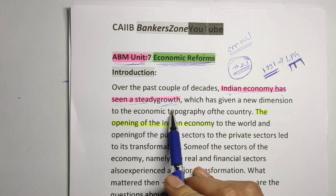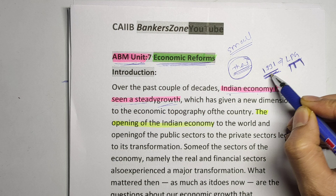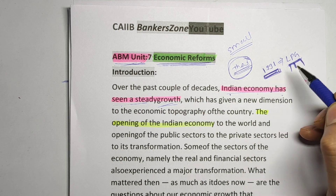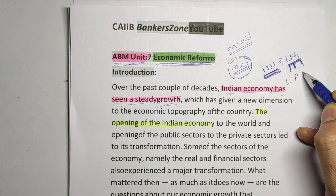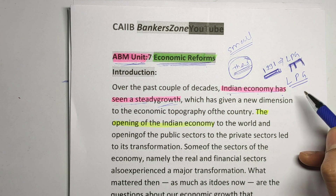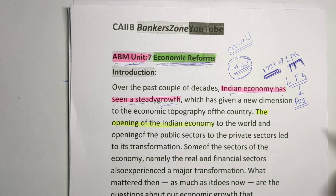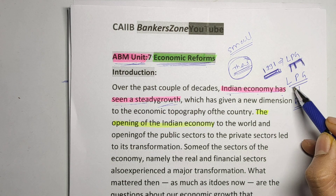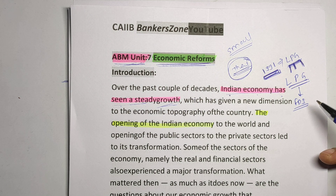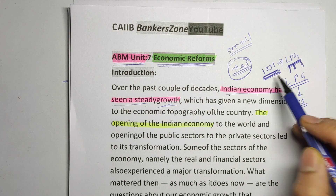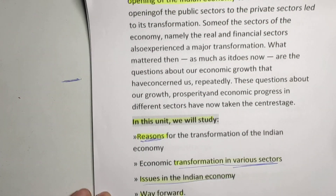The Indian economy has seen steady growth mainly after 1991. In 1991, LPG reforms were adopted — that is liberalization, privatization, and globalization. That's why FDI was allowed in India and many private players were also allowed, and that's why our economy boomed with good growth after 1991.